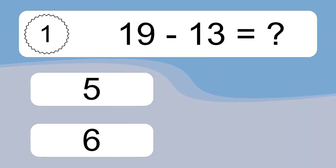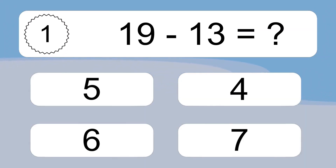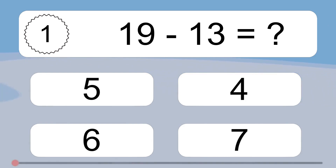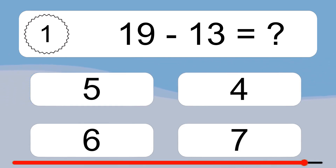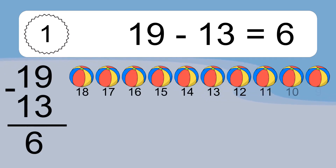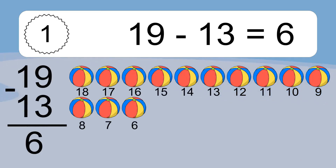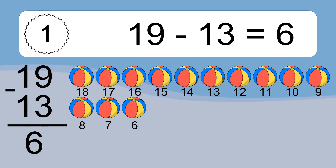19 minus 13 equals what? 19 minus 13 equals 6. Let's count it: 18, 17, 16, 15, 14, 13, 12, 11, 10, 9, 8, 7, 6.